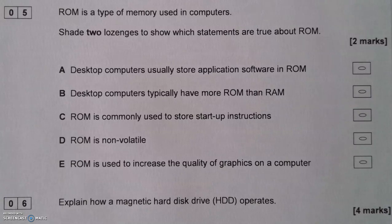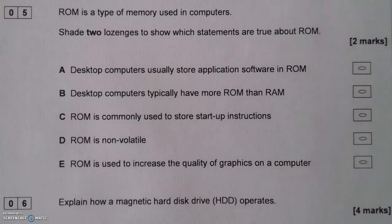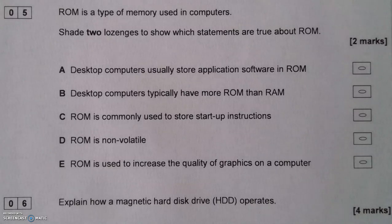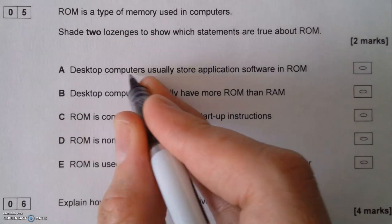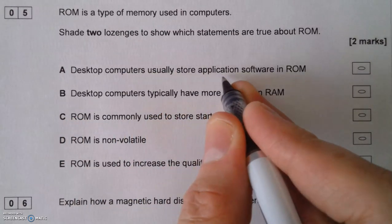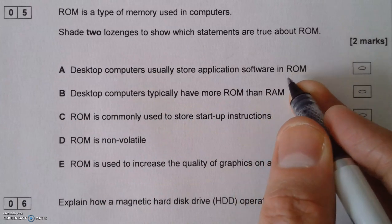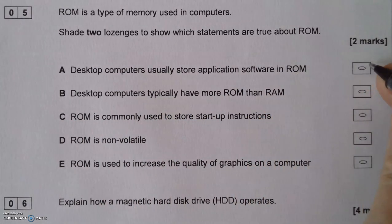Here's an exam question — an application of this. The question says: ROM is a type of memory used in computers. Shade two lozenges to show which of the statements are true about ROM. Statement A: desktop computers usually store application software in ROM. No, they don't — it's on the hard drive. So that isn't true, we're not going to shade that.